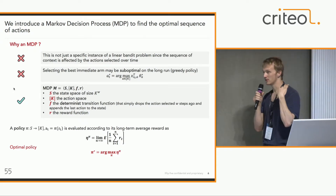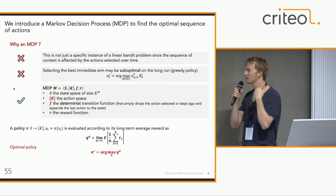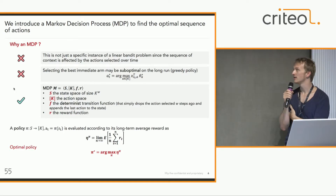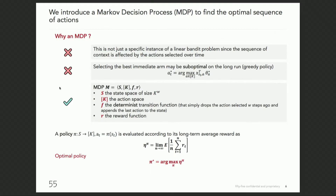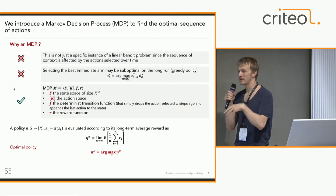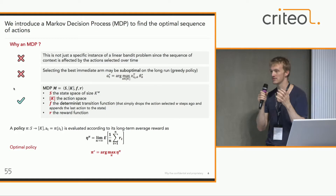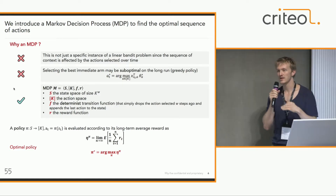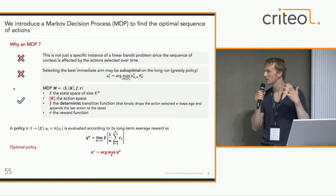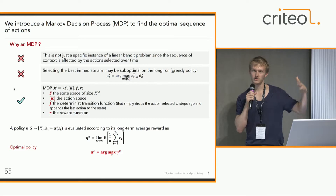In order to find the optimal cadence of actions, we are going to use MDPs. Why MDP and not just a linear bandit? First, because the sequence of contexts will be affected by our actions. Also, taking the best immediate arm at each time step is not necessarily the best policy, because sometimes we would like to take a slightly suboptimal action in order to let other actions recharge and win more in the future.